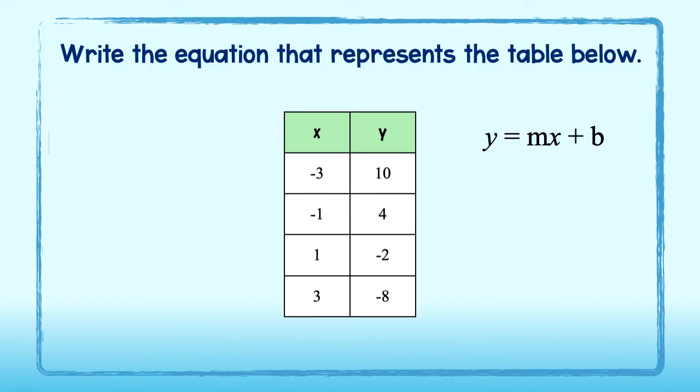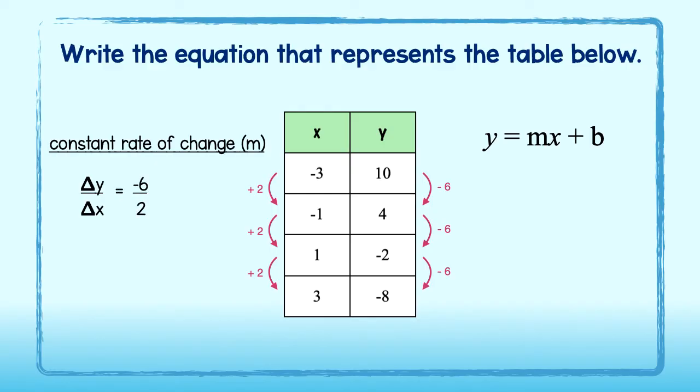We can find the slope, or constant rate of change, by figuring out the change in y over the change in x. I see the x values increase by 2 each time, and the y values decrease by 6. My constant rate of change, or slope, is negative 6 over 2, which reduces to negative 3. I can plug negative 3 into my equation for slope.